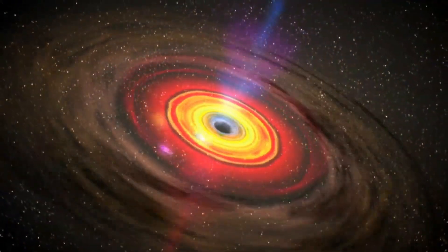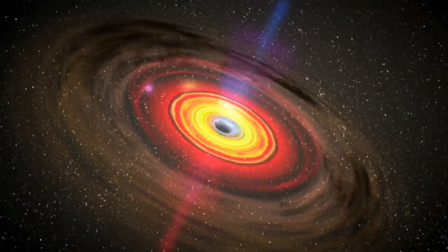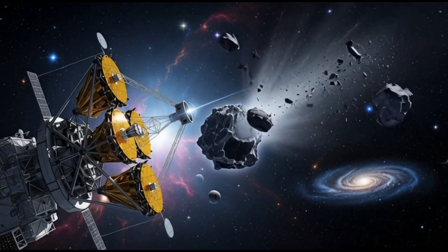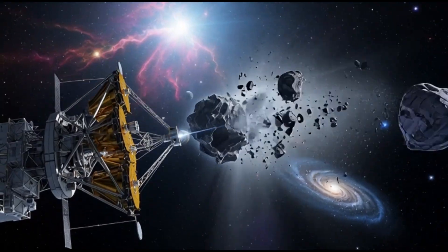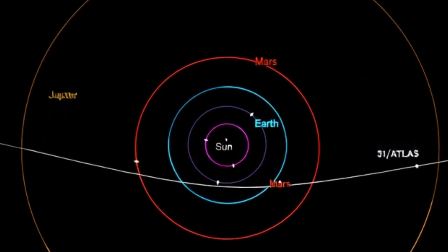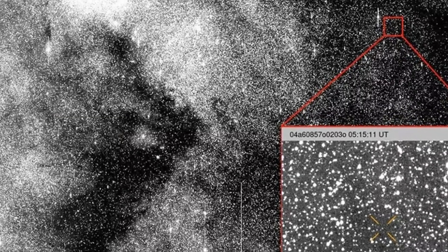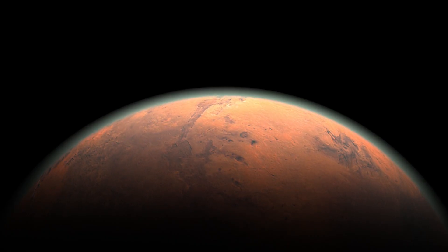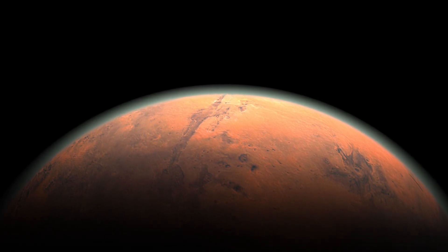But if none of that happens, if the comet stays unpredictable, continues to defy gravity, refuses to shed its secrets, then 3-Eye Atlas could force a complete rewrite of what we know about comets, interstellar travelers, and the processes that shape them. And that's the part that keeps astronomers and the rest of us glued to the sky. This tiny object hurtling silently from the stars may be whispering something profound about the universe, something we've never seen before.